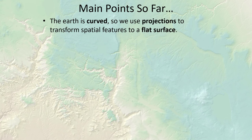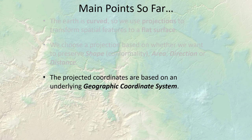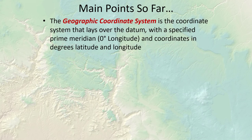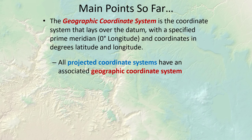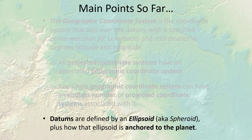Let's go over a few review points. The earth is curved, so we use projections to transform spatial features onto a flat surface, choosing a projection based on whether we want to preserve shape, area, direction, or distance. Projected coordinates are based on an underlying geographic coordinate system, which lays over the datum. The datum is the spheroid and the way it's anchored to the planet. The geographic coordinate system sets a prime meridian — zero degrees longitude — and then sets coordinates in degrees of latitude and longitude. Any single geographic coordinate system can have an endless number of projected coordinate systems projected from it.